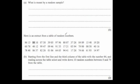Here's an extract from a table of random numbers. Starting from the first line and the third column of the table — the number 64 — and reading across the table, write down 10 numbers at random between 0 and 79. The first thing you need to do is consider the rule. Since we start at the third number, we're going to take every third number. It's important that you don't just choose 10 numbers totally at random — you've got to follow some sort of pattern.